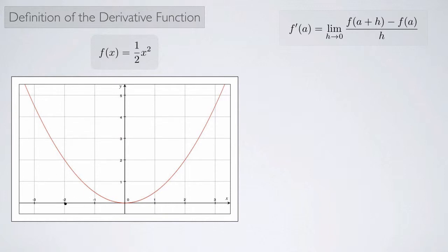At negative 3, negative 2, and negative 1, we see that a tangent line at each of those points would have a negative slope, so we'd expect a negative number when we calculate the derivative at these points. At 0, it looks like the tangent line would be a flat line, and the slope of a horizontal line is 0, so we'd expect to get 0. Then for points like 1, 2, and 3, we'd expect a positive number because the tangent line would have a positive slope.